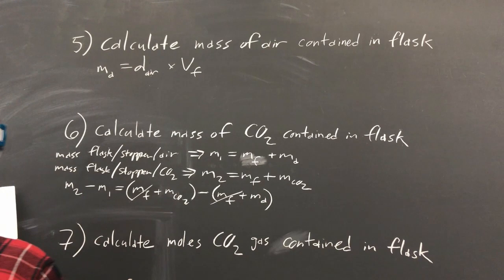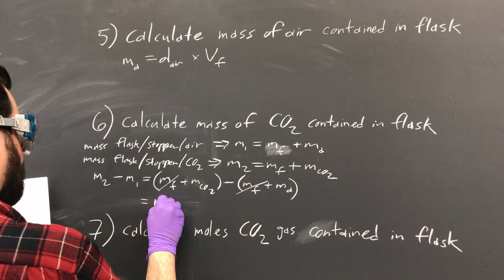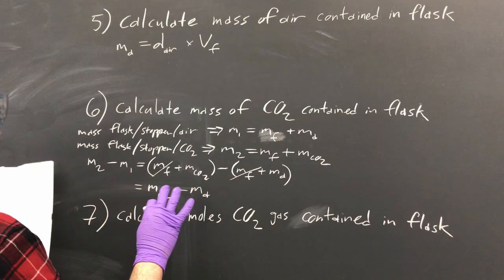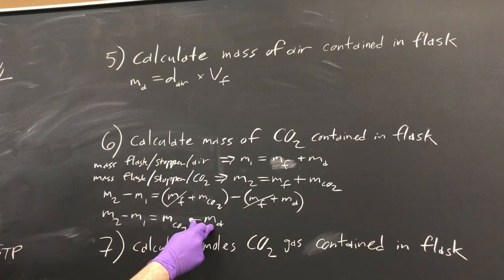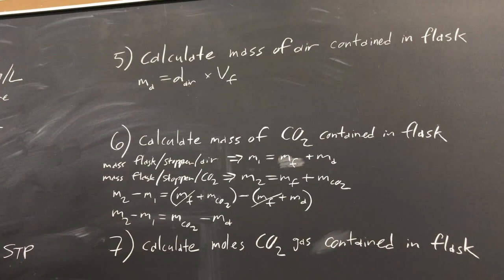So you have M2 minus M1 equals quantity MF plus MCO2 minus MF plus MA. These cancel out, and you're left with this equals MCO2 minus MA. So then to calculate the mass of CO2, you'll have to rearrange this to find the mass of CO2, since we know the mass of air from earlier, and we know M2 minus M1 from our experiment itself.